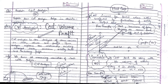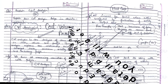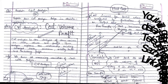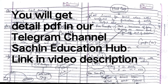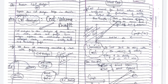Most students want to attempt the theory rather than practical because their practical is not good, so by completing the theory they can get good marks easily. The important question in the marginal costing chapter is regarding CVP analysis: write a short note on CVP analysis and how it is helpful for managerial decision making. Before starting, we have to begin our answer with the meaning of marginal costing.